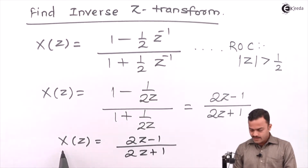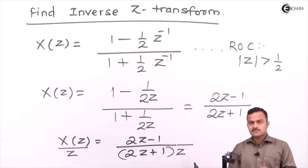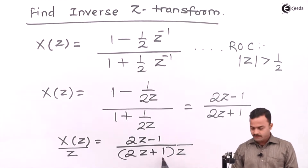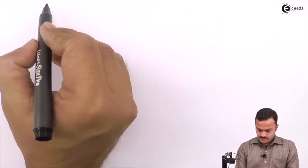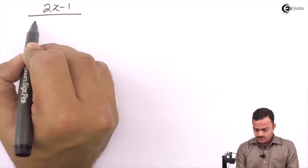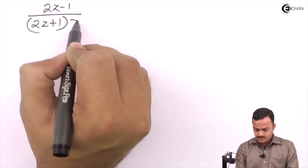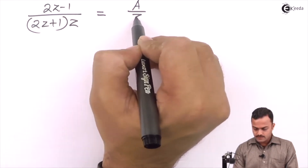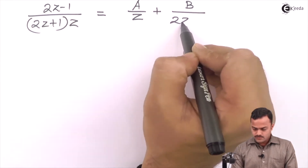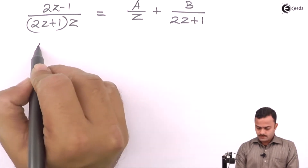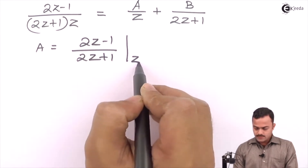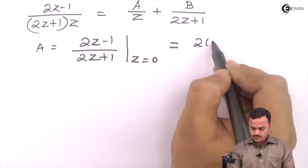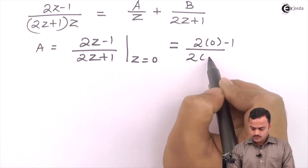We will do one thing: since it is a linear factor, we will do the partial fraction of this term. I have increased the degree of the numerator by 1 by multiplying by z, so that we do a partial fraction. (2z - 1) upon (2z + 1) into z will have the partial fraction as a upon z plus b upon (2z + 1). We obtain a by putting z equal to 0, which is (2×0 - 1) upon (2×0 + 1).